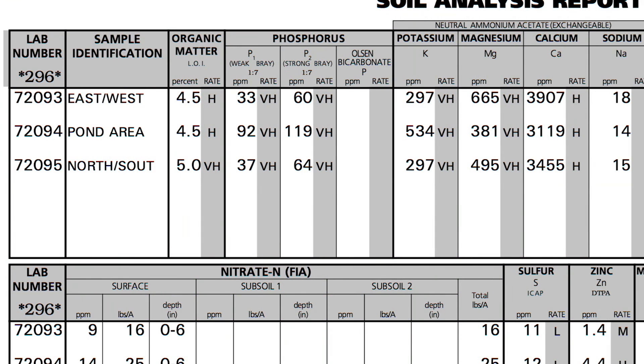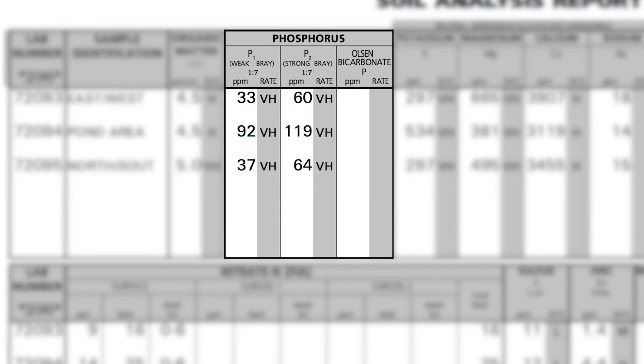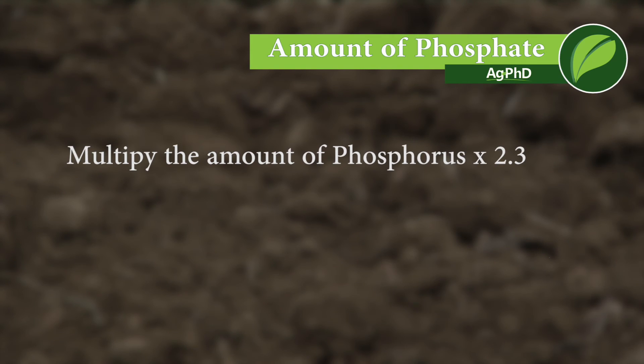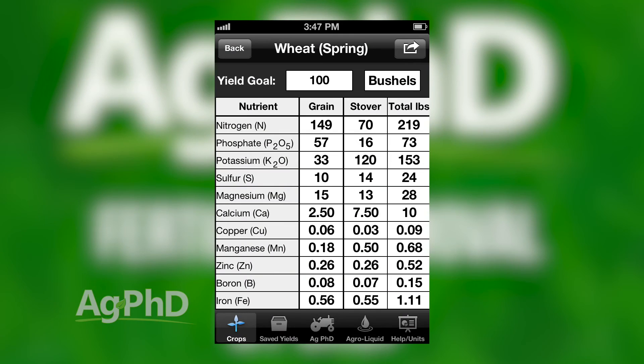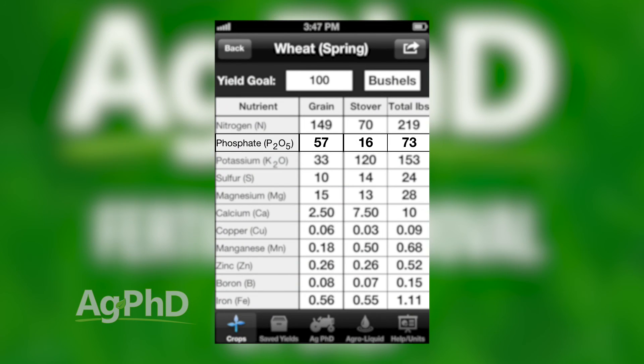On most soil tests you will see a phosphorus number. You need to multiply that number times 2.3. For example, if your phosphorus level shows 10, you multiply that times 2.3 and you actually have 23 parts per million of phosphate. Most people talk about how much phosphorus your crop needs, but what they mean is phosphate. The Ag PhD Fertilizer Removal App will tell you specifically phosphate — this is how much phosphate you need, not how much phosphorus.